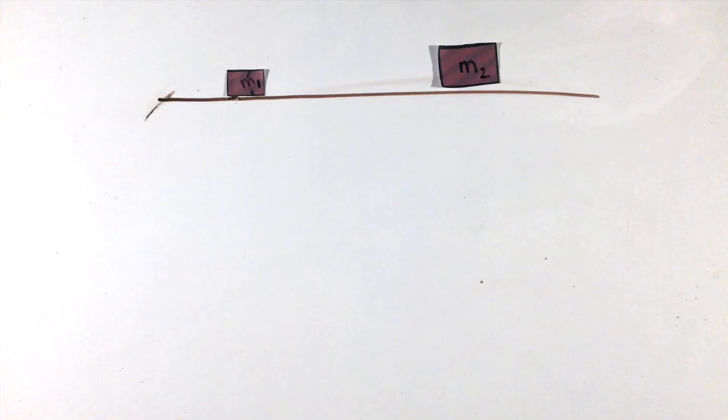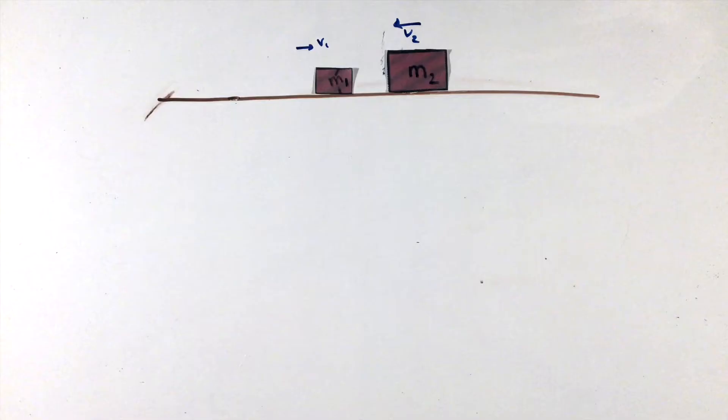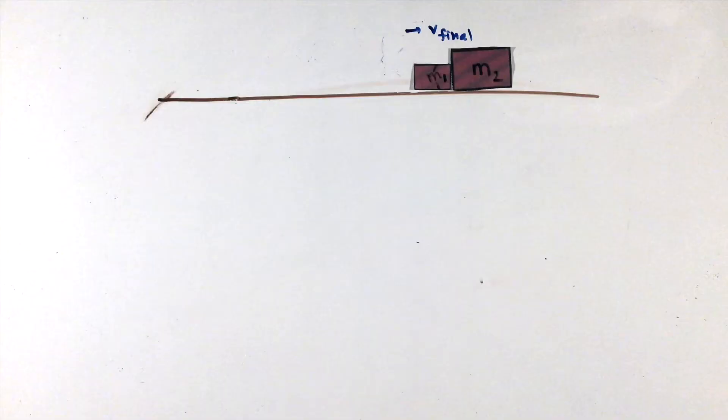To solve these types of problems, the only equation you need to write is the conservation of momentum. For example, let's say we have a block of mass m1 moving to the right with a speed of v1, and it crashes into another block of mass m2 moving to the left at a speed v2, and they stick together after colliding.